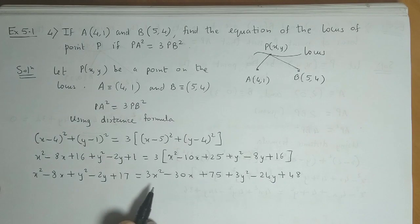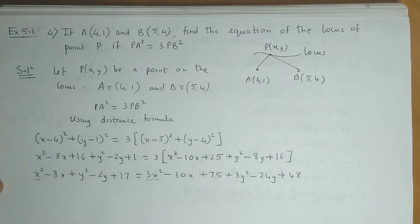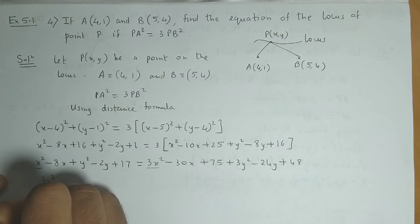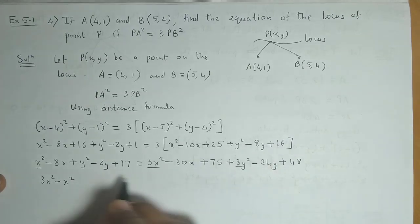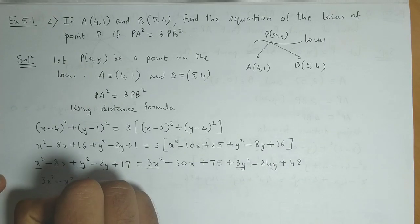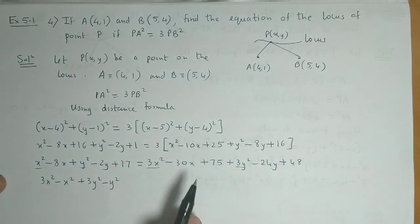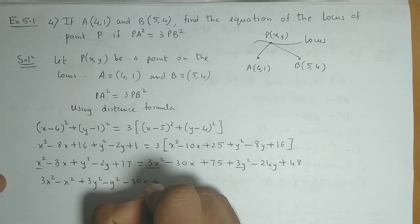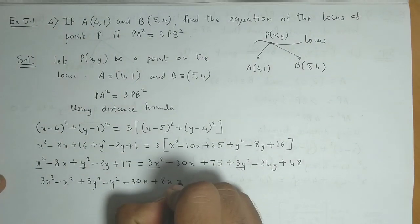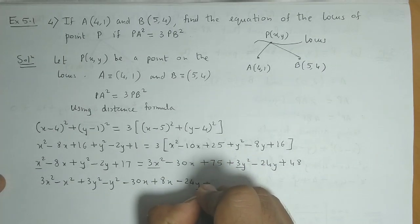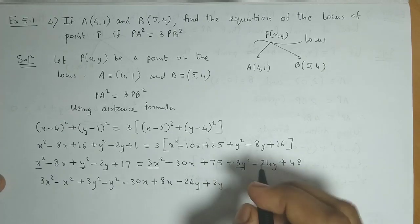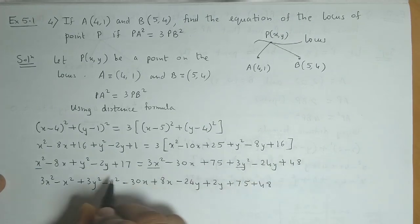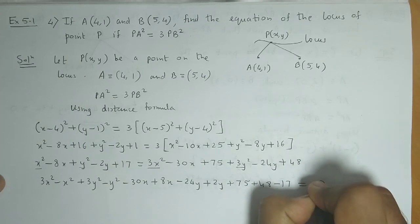So we rearrange the terms. 3x squared minus x squared gives 2x squared, and 3y squared minus y squared gives 2y squared. For the x terms: minus 30x plus 8x gives minus 22x. For the y terms: minus 24y plus 2y gives minus 22y. Then 75 plus 48 minus 17, which gives 106, is equal to 0.